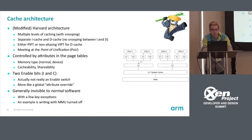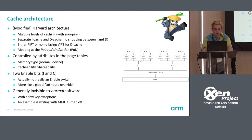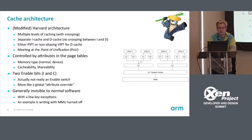All caches meet at the point of unification, which is L2 — where the instruction cache and data cache meet. There is also a point of coherency, where all CPUs share the same cache. The cache is controlled by attributes in the page tables: memory type (normal vs. device), cacheability, and shareability. These tell you whether data from a specific region will be cached or skip the cache. There are also attribute override bits; even if you disable the cache, it may still be used. Generally, caching is invisible to normal software — but there's an exception when the MMU is off.